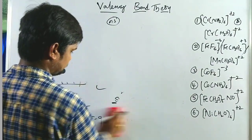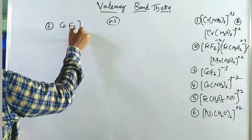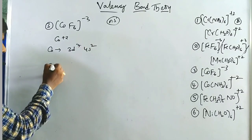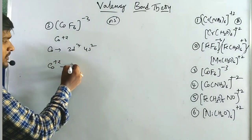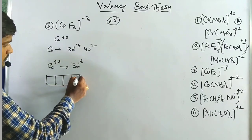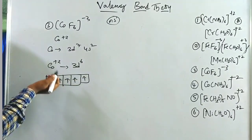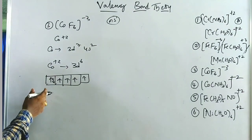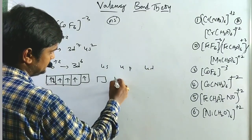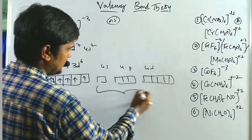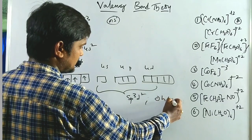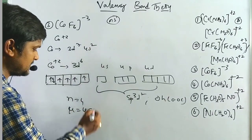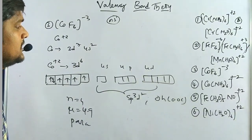Third example: [CoF₆]³⁻. Cobalt has configuration 3d⁷ 4s². Co³⁺ means loss of 3 electrons (2 from 4s, 1 from 3d), giving 3d⁶. With 6 electrons and no forced pairing (weak field ligand), 4s, 4p, and 4d orbitals are vacant. Hybridization is sp³d², shape is octahedral OOC. Number of unpaired electrons is 4, so μ = 4.9 Bohr magnetons — paramagnetic. Fourth example: [Co(NH₃)₆]²⁺. Co has configuration 4s² 3d⁷. Co²⁺ gives 3d⁷ with 7 electrons and 3 unpaired electrons. Hybridization is sp³d² using 4s, 4p, 4d orbitals. Shape is octahedral OOC. n = 3, μ = 3.9 Bohr magnetons — paramagnetic.